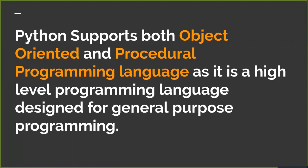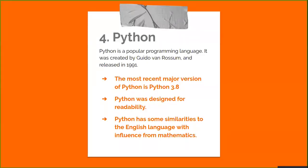If you do much work on computers, eventually you find there are some tasks you would like to automate. If you are a professional software developer, you may have to work with several C, C++, or Java libraries, but you may find the usual write-compile-test-recompile cycle is too slow. Python is just the language for you. Python is a popular programming language created by Guido Van Rossum and initially released in 1991. The most recent version is Python 3.8.